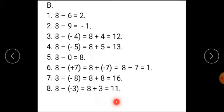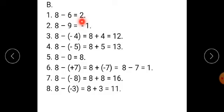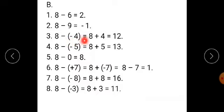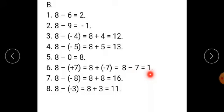Now the second number from the column is 8, and we subtract each number in the top row from it. 8 minus 6 equals 2. 8 minus 9 — signs are different, so 9 minus 8 equals 1, sign of bigger number, therefore minus 1. 8 minus minus 4 — add plus 4, so 8 plus 4 equals 12. 8 minus minus 5 equals 8 plus 5 equals 13. 8 minus 0 equals 8. 8 minus plus 7 equals 8 minus 7 — signs are different, so 8 minus 7 gives 1, sign of the bigger number is positive, therefore answer is 1 or plus 1. 8 minus minus 8 — opposite of minus 8 is 8, so 8 plus 8 equals 16. 8 minus minus 3 equals 8 plus 3 equals 11.